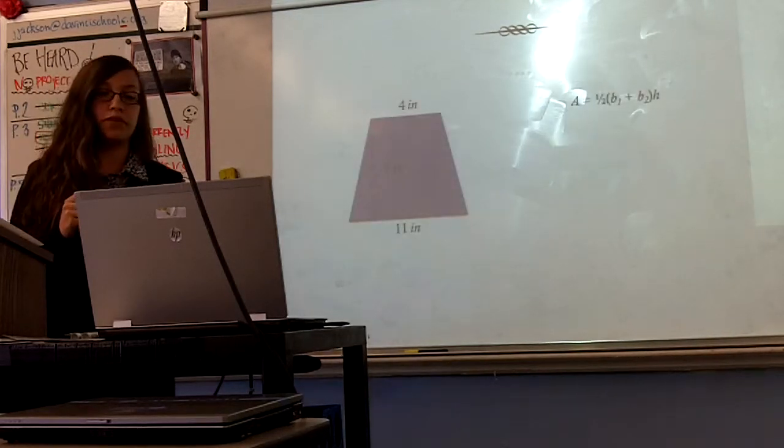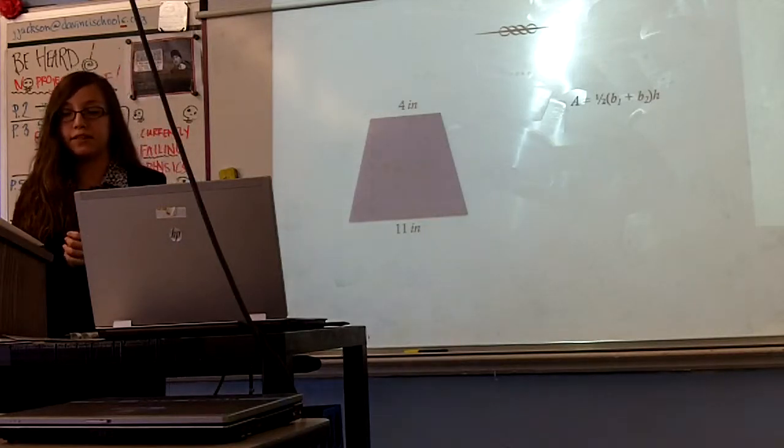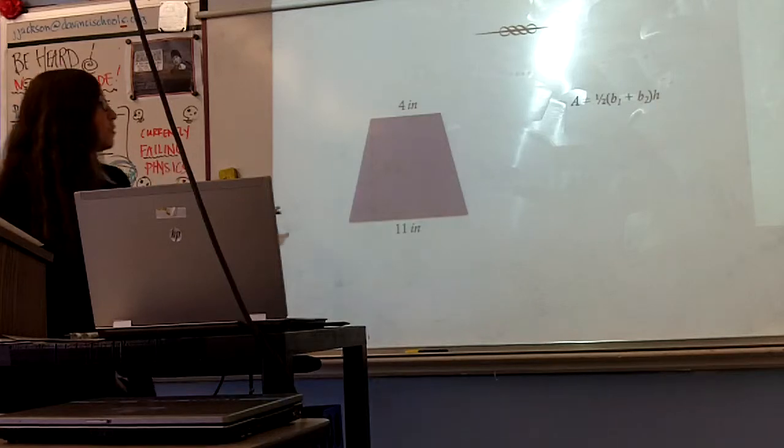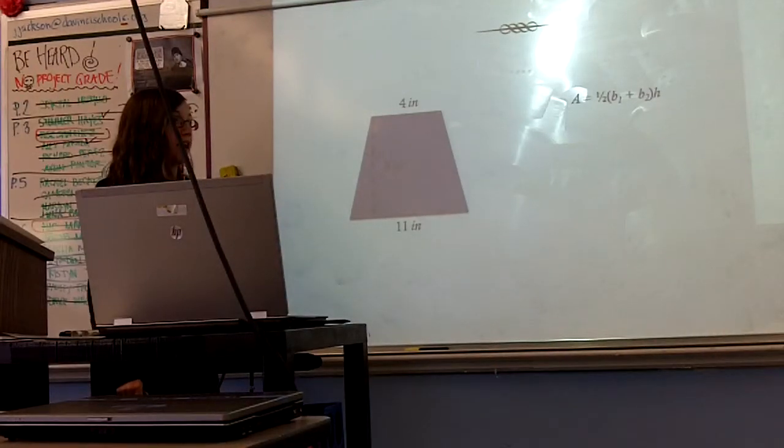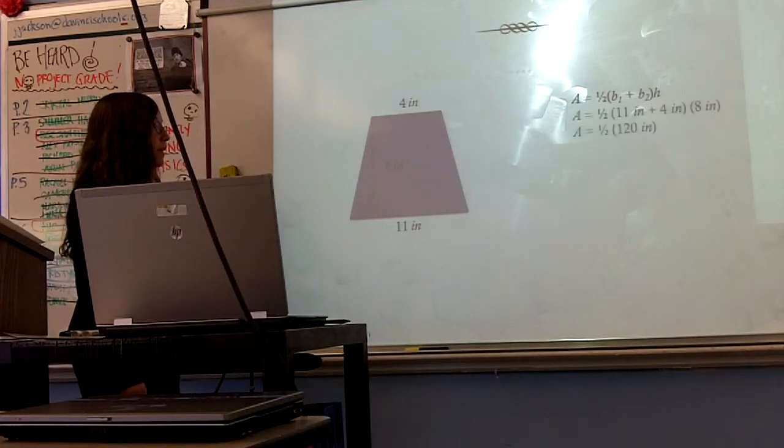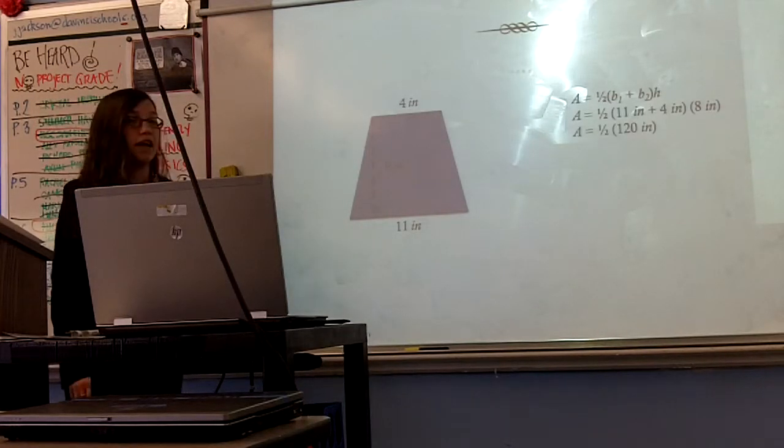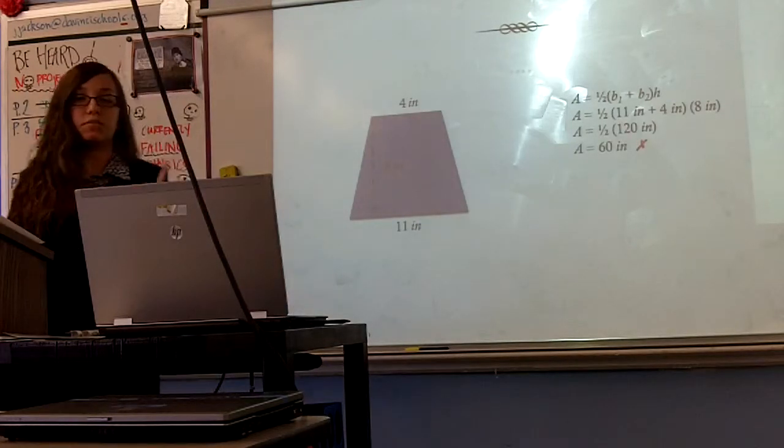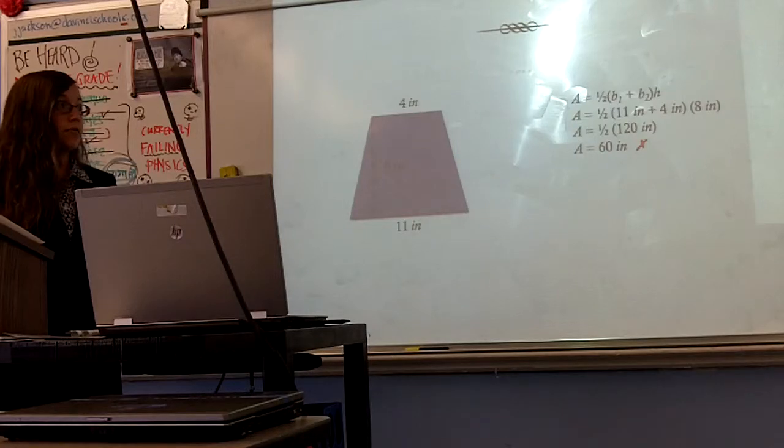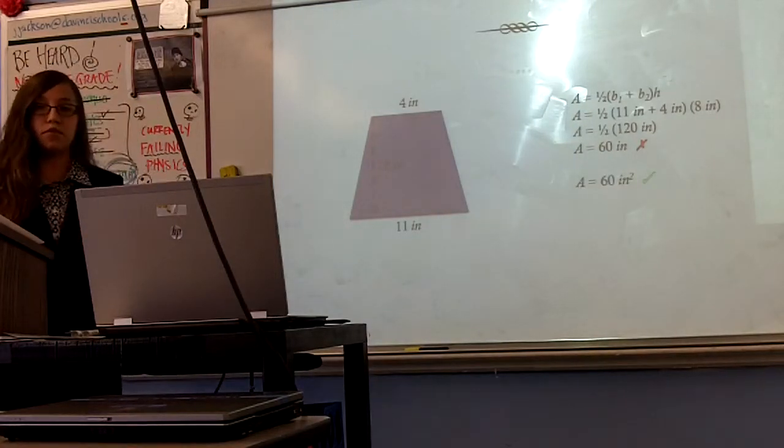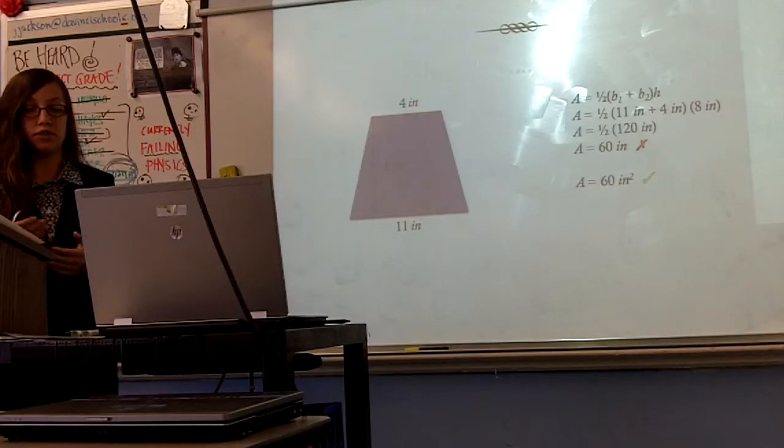For example, we use this trapezoid from one of my polygon quizzes. The equation for the area of a trapezoid is A equals one-half times B1 plus B2 times H, where A is the area, B is base, and H is height. If we plug in a base of 11 inches, a base of 4 inches, and a height of 8 inches, we get an area of 60 inches, but we don't stop there. In area we square our measurements, so the correct answer would be 60 inches squared.